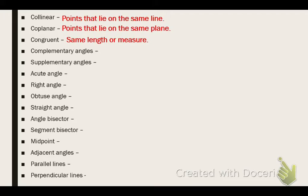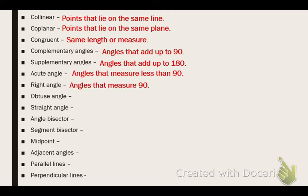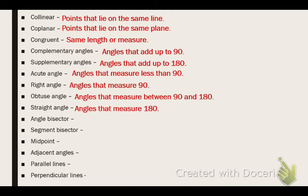Complementary angles are angles that add up to 90. Supplementary angles are angles that add up to 180. Some people would use the word 'sum' — angles that sum to 90 or sum to 180. That means they add up. An acute angle is less than 90. A right angle measures exactly 90. An obtuse angle measures between 90 and 180. A straight angle measures 180.